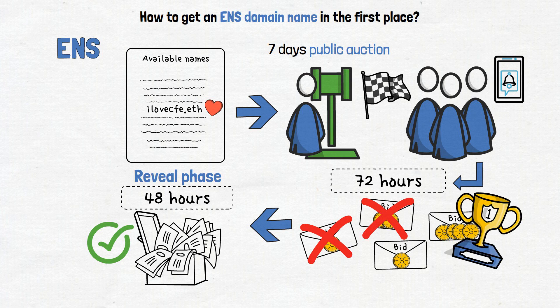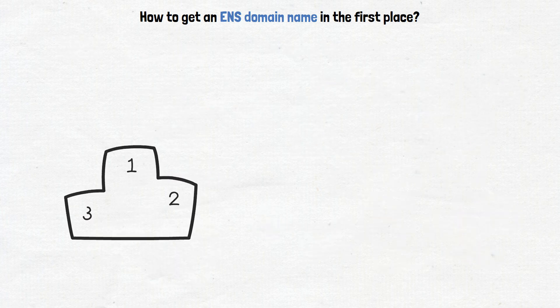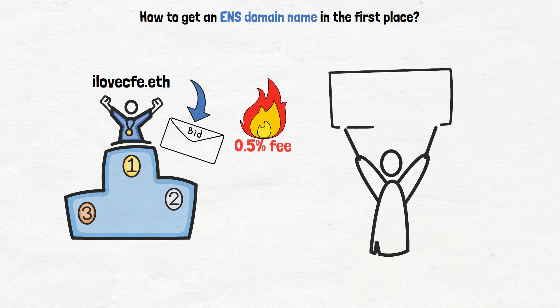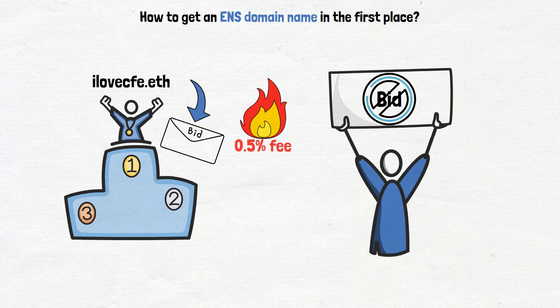After the reveal, the highest contender wins the auction. If the person wins the race for the domain, they receive the entire deposit back, except for a 0.5% fee, which was burned in the process. As I mentioned before, if the user fails to reveal their bid, the entire fund is set to be burned.